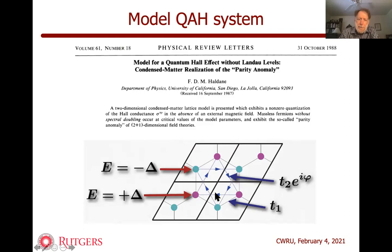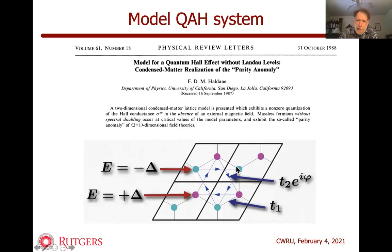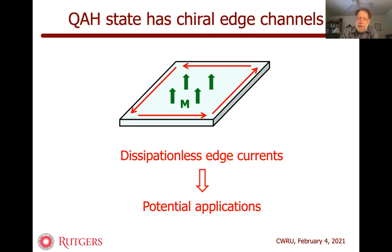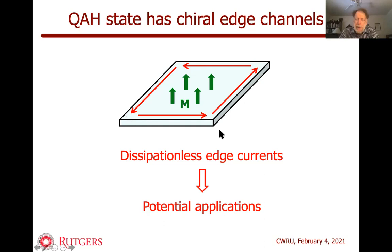Haldane's 1988 paper basically wrote down a simplified tight-binding model where he put in first-neighbor hoppings and then second-neighbor hoppings that were complex. The complex phase of the second-neighbor hoppings is a way of putting time reversal symmetry breaking by hand into the Hamiltonian. So this is a Hamiltonian for a ferromagnetic two-dimensional insulator. He showed that with appropriate values of parameters you could get into this quantum anomalous Hall condition. It was demonstrated theoretically way back in 1988, but it took a long time before it was demonstrated experimentally or even before the importance was realized.